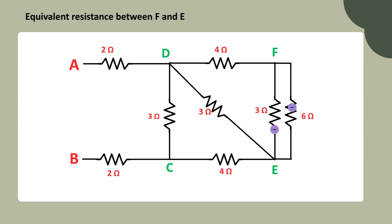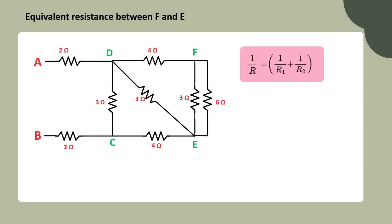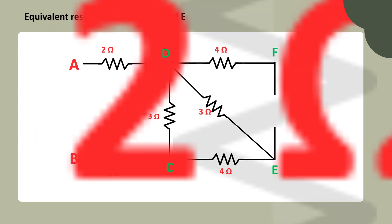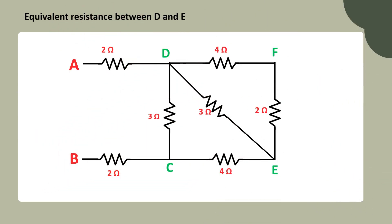Take a closer look at the path between points F and E. The current splits and flows through the 3 ohm and 6 ohm resistors. Since the current divides between them, these resistors are connected in parallel. Substituting the values into the formula, 1 over the equivalent resistance equals 1 over 3 plus 1 over 6, giving us 3 over 6. So the equivalent resistance between F and E is 2 ohms. Let's simplify the circuit by replacing the 3 ohm and 6 ohm resistors with a single 2 ohm resistor.